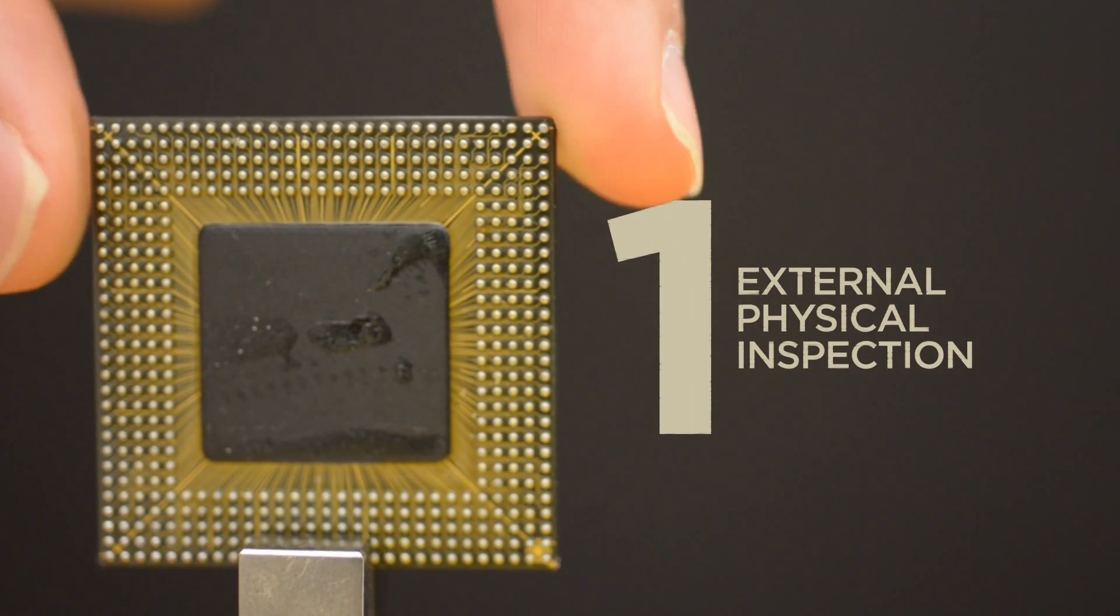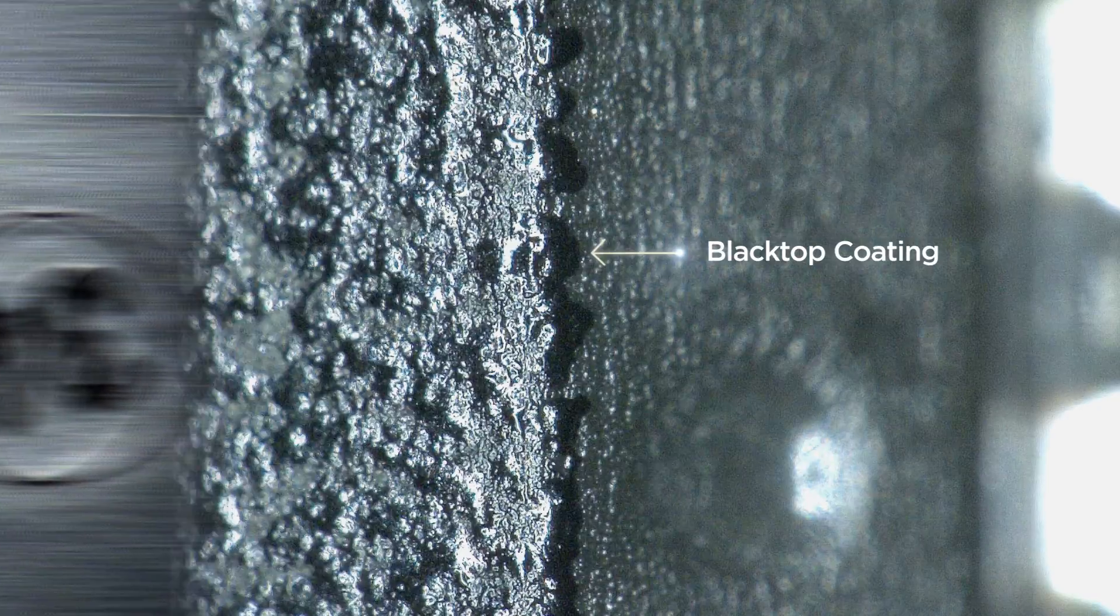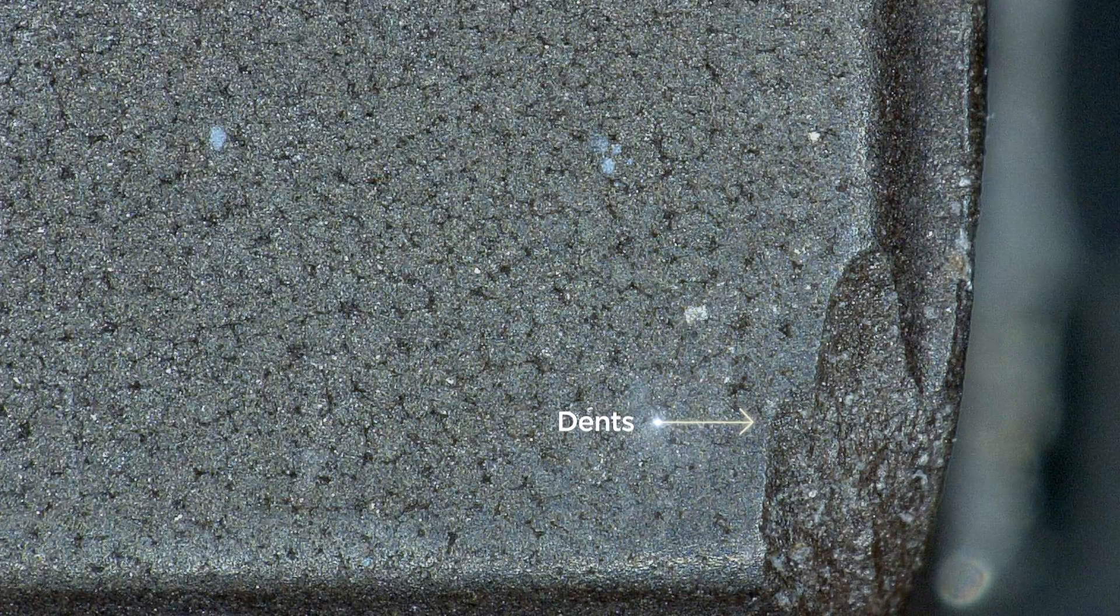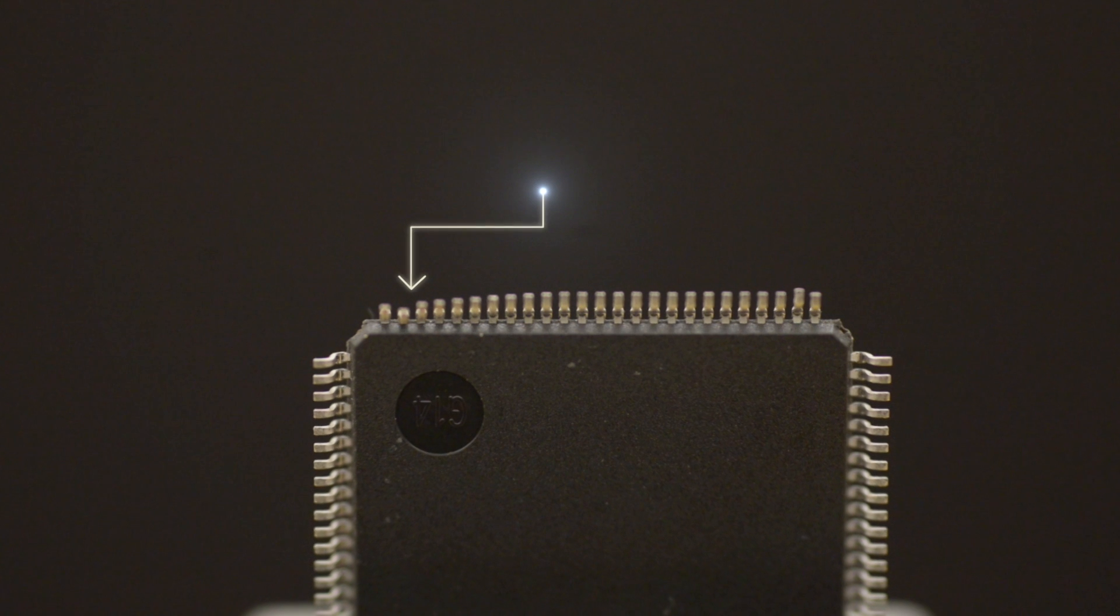Step 1 is an external physical inspection. Counterfeit chips can have visible burn markings, discoloration, blacktop coating, dents, tooling marks, and countless other defects.